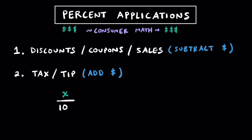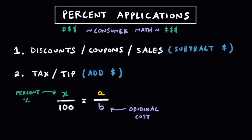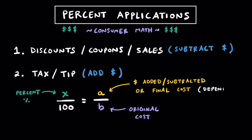Hopefully this percent proportion looks familiar: x over 100 is equal to a over b. Remember, x represents the percent we're talking about, b represents the original cost of an item or the cost of a meal, and a is going to represent the amount of money that's added or subtracted, or the final cost, depending on how you look at the problem. Now, a is going to be greater than b if we're talking about tax or tip — additional costs on top of the original — and a is going to be less than b when you have a discount, coupon, or sale.